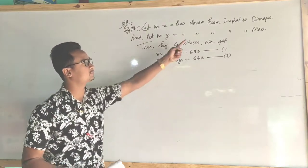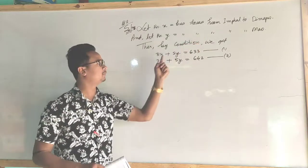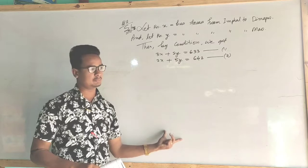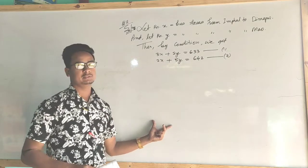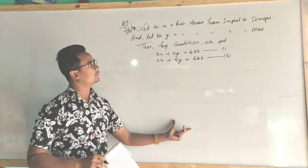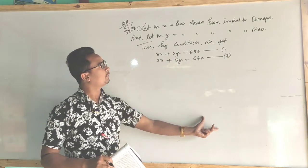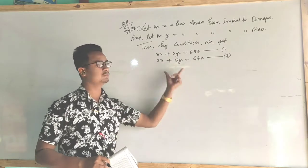This is the last one. Imphal to Dimapur: the code is 1. This is the first ticket. Values: 2, 4, 5, 6.